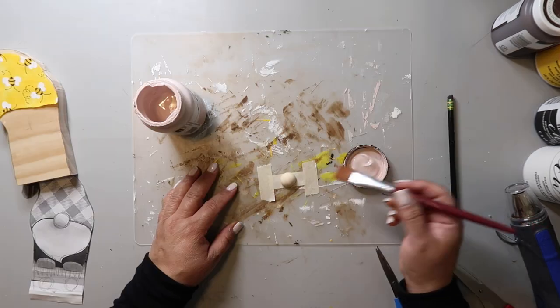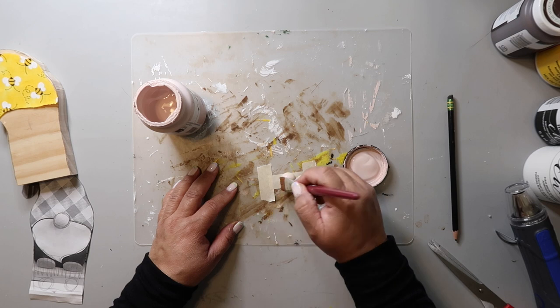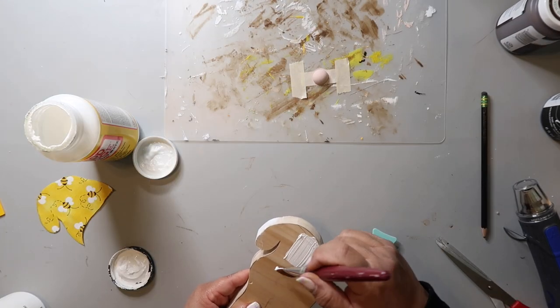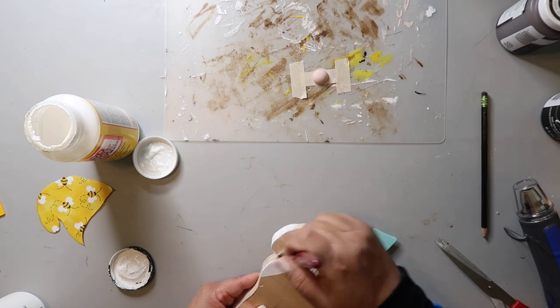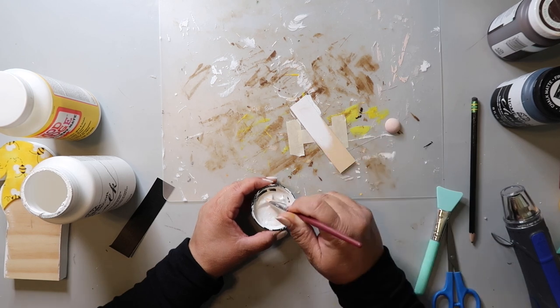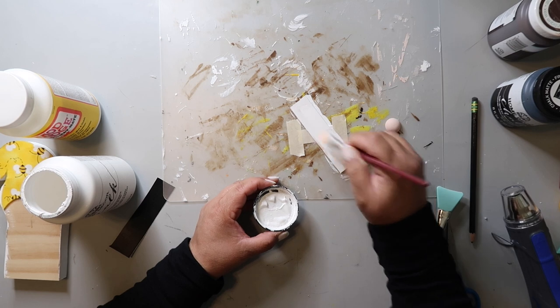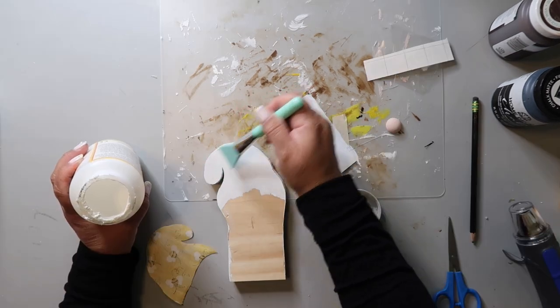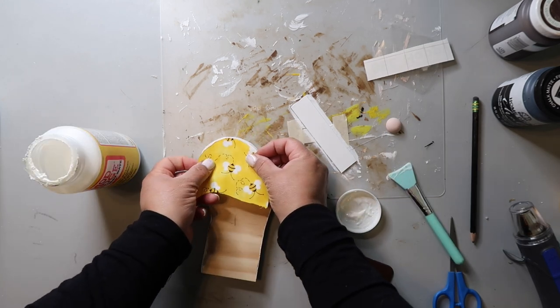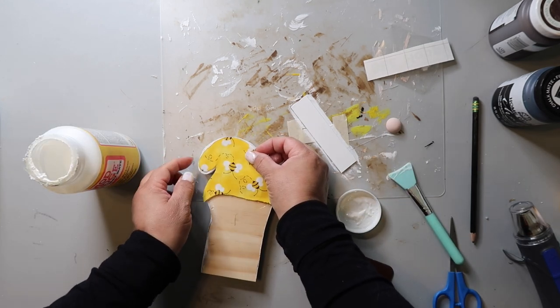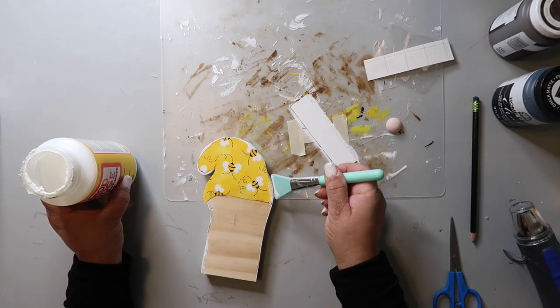And then using the same technique that I showed y'all earlier, I'm painting the gnome's nose a light pink. And where the material for the cap is going to go, I'm giving it a coat of white paint. This large craft or popsicle stick is going to be a sign and I'm painting it white. And I'm putting some Mod Podge on the cap area. And then I'm carefully going to lay down the material.